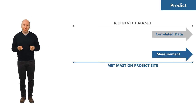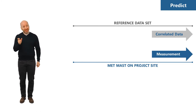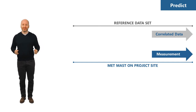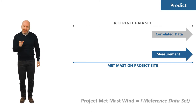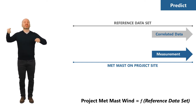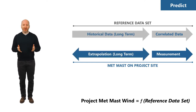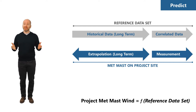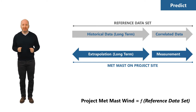Using software, the wind engineer develops an equation characterizing the relationship observed during the overlap period between the reference site and the target project site: wind at the metmast is a function of wind at the reference site. From this function, long-term data from the reference site — typically 10 years of National Weather Station data — is used to extrapolate the wind characteristics expected at the wind project over a long period of time.